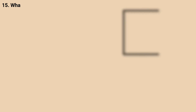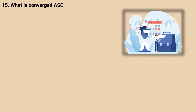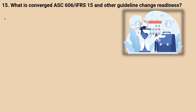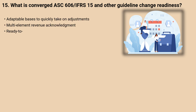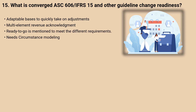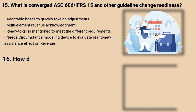15. What is converged ASC-606 IFRS 15 and other guideline change readiness? Adaptable basis to quickly take on adjustments, multi-element revenue acknowledgement, ready-to-go reporting to meet different requirements. Needs circumstance modeling tool to evaluate the impact of new guidance on revenue.